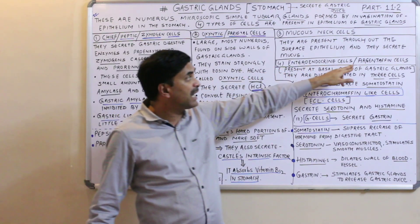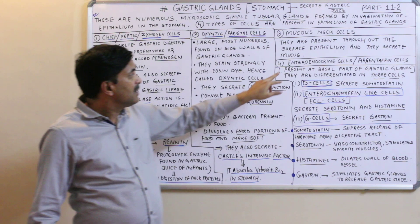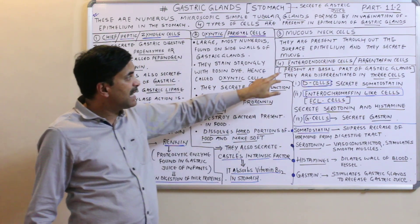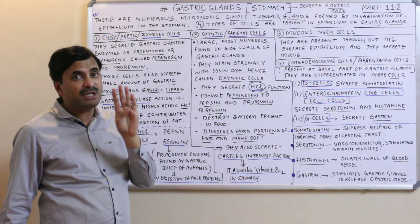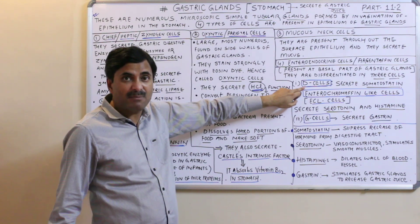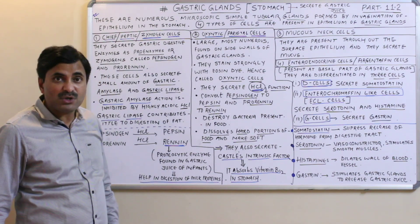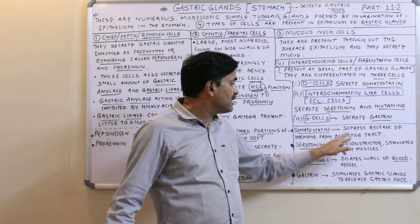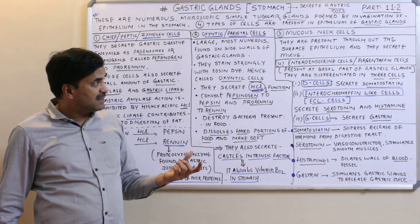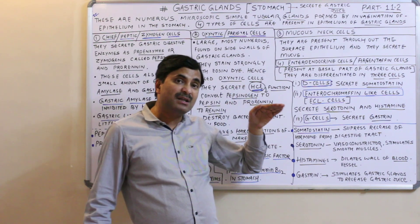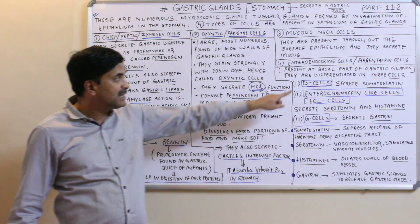The fourth cell type is the enteroendocrine cells, also called argentaffin cells, which are present at the basal part of the gastric glands. These cells are differentiated into three types. The first type is D cells, which release somatostatin. Somatostatin suppresses — that is, inhibits — the release of hormones from the digestive tract.